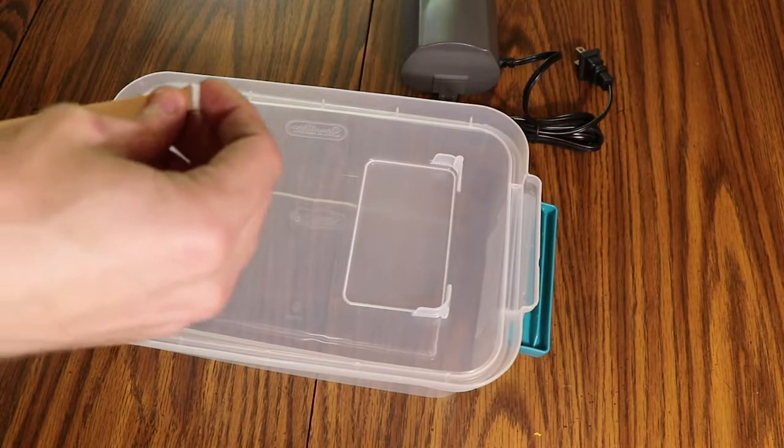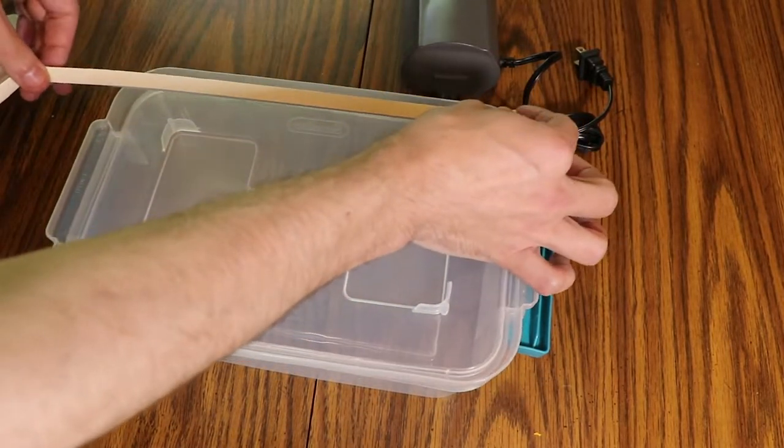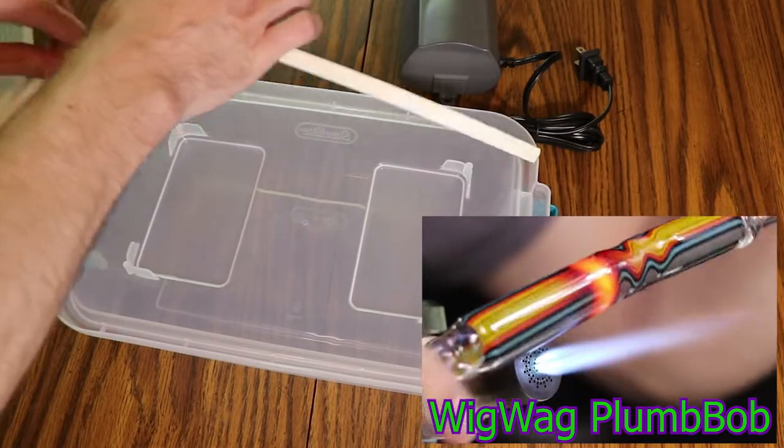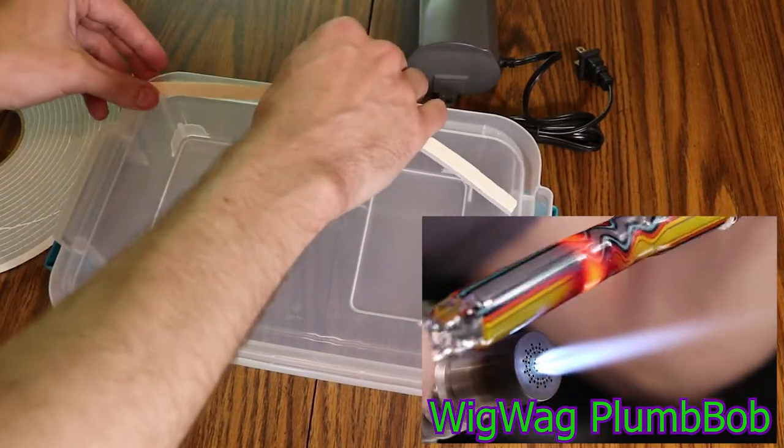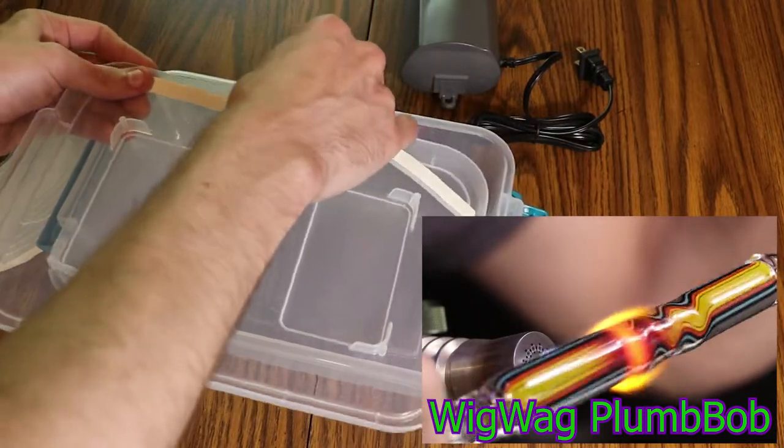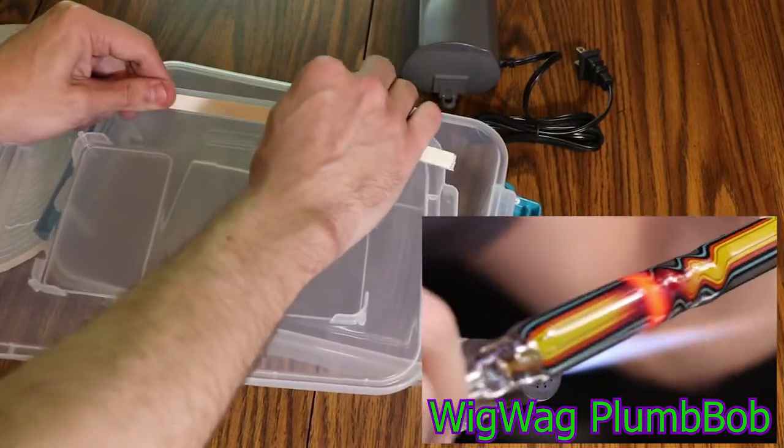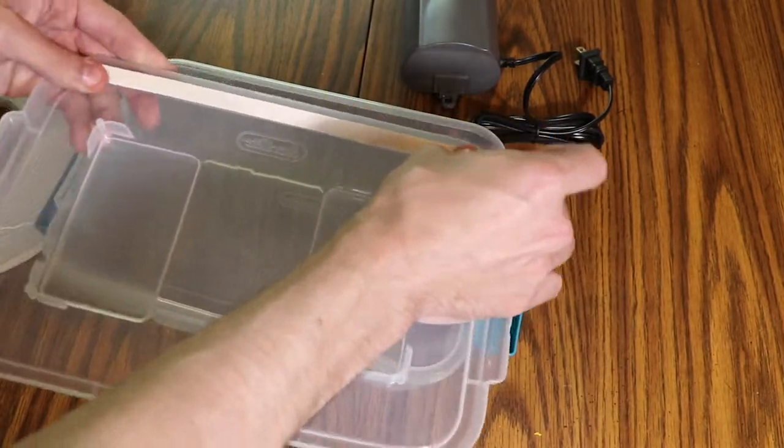Welcome back to the Matt Yassa channel. I was twisting up some beautiful wigwag plumb bobs in my last video using some pre-pulled tubing that I bought. So I figured I would go into the steps to make your own line tubing for wigwag practice.